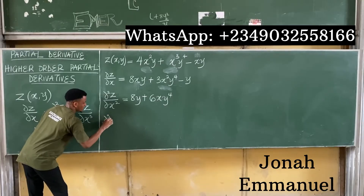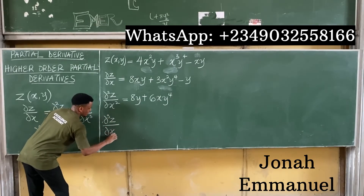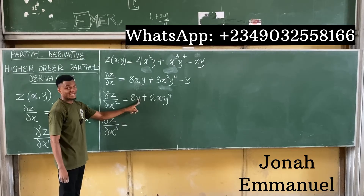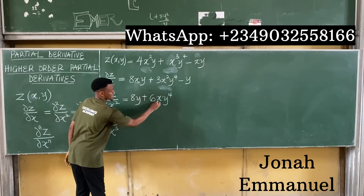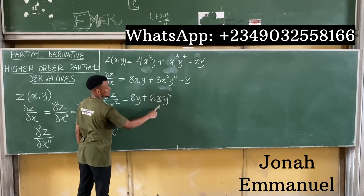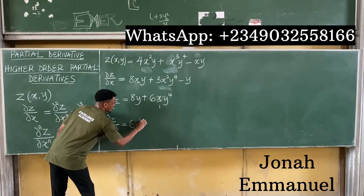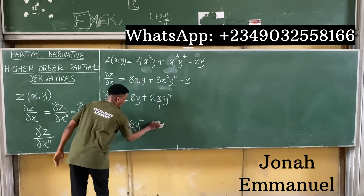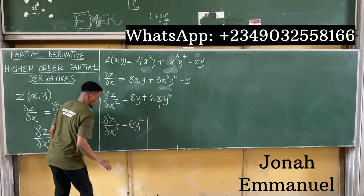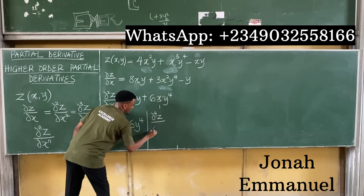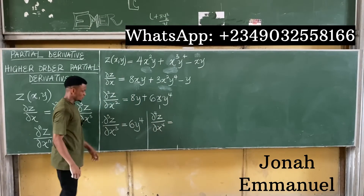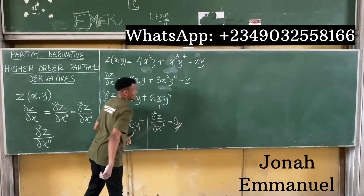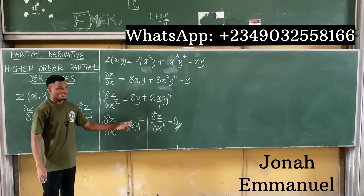For the third partial derivative, partial cubed z all over partial x cubed: differentiating 8y — there is no x — gives 0. Differentiating x in 6xy to the power 4 gives 1; 6 times 1 times y to the power 4 gives 6y to the power 4. So partial cubed z over partial x cubed equals 6y to the power 4. For the fourth partial derivative, partial to the power 4 z all over partial x to the power 4: there is no x term in 6y to the power 4, so differentiating gives 0.